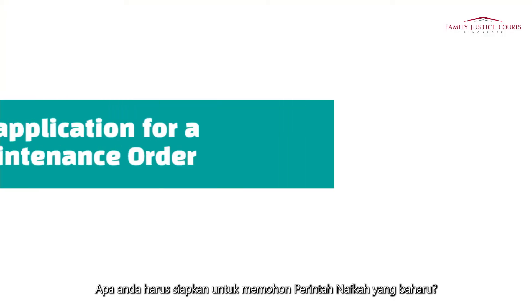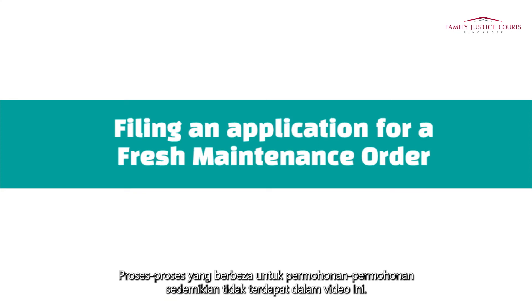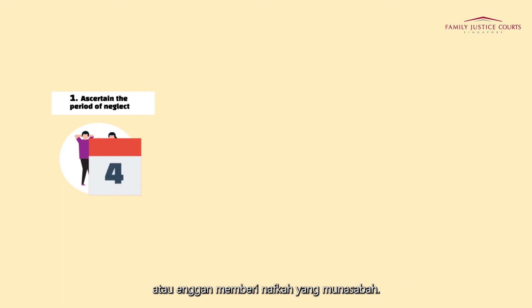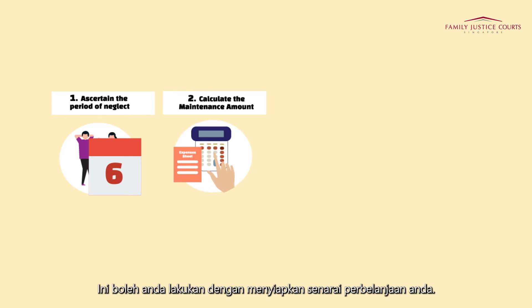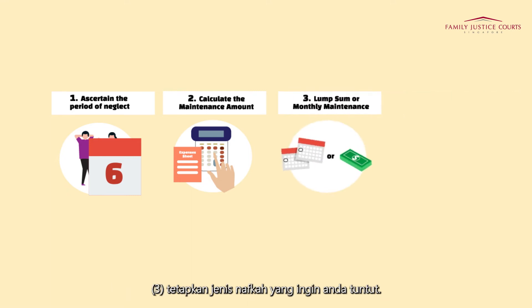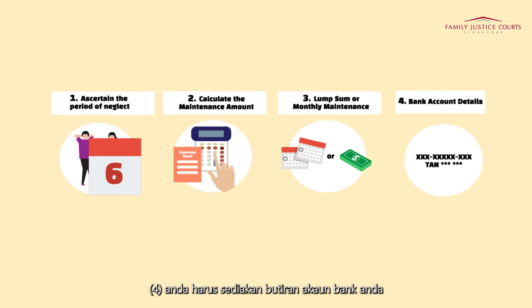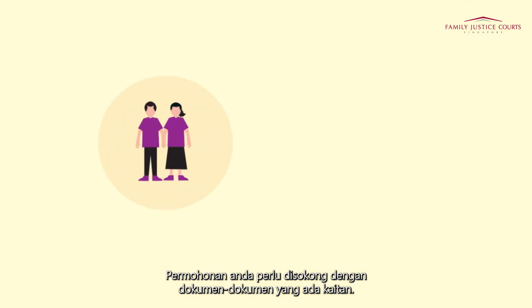What should you prepare when filing an application for a fresh maintenance order? Please note that this video does not cover fresh and variation maintenance applications under a Women's Charter Divorce writ, as different processes apply for those. Before filing an application for a fresh maintenance order, take note of the following: ascertain the period that your spouse or parent has neglected or refused to provide reasonable maintenance; calculate the maintenance you are requesting for, which can be done by working out an expenses sheet; settle on the type of maintenance you are requesting — lump sum or monthly; and have your bank account details ready if you are requesting a bank transfer as the mode of payment. Your application must also be supported by relevant documents.